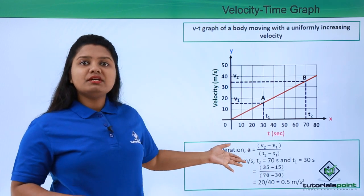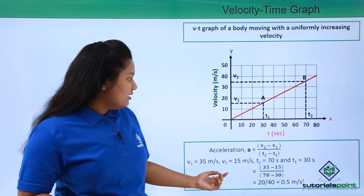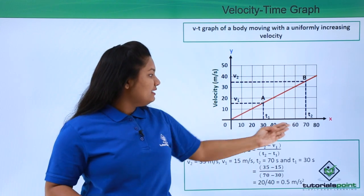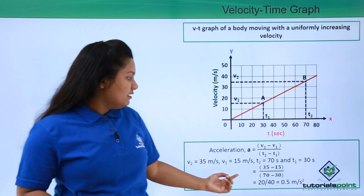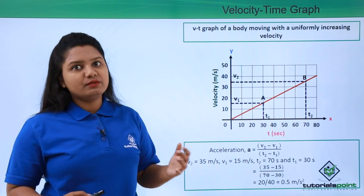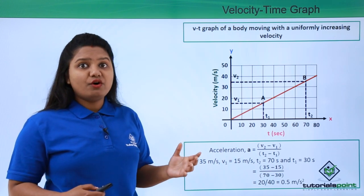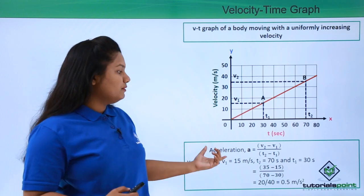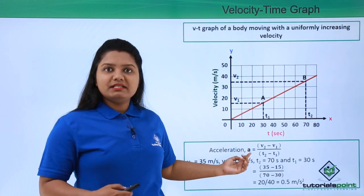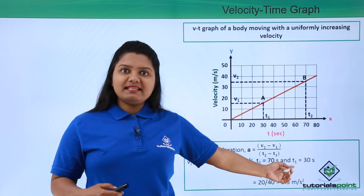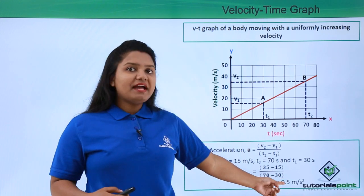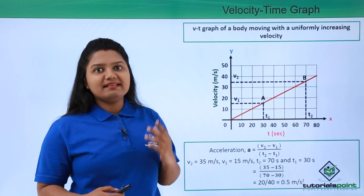It's time to substitute all four values into the expression. So the acceleration equals 35 minus 15 divided by 70 minus 30, which yields 20 divided by 40, that is 0.5 meters per second squared. We must keep in mind the unit of a physical quantity whenever we solve problems, so the unit of acceleration is meters per second squared, giving us 0.5 m/s² as the value of acceleration.